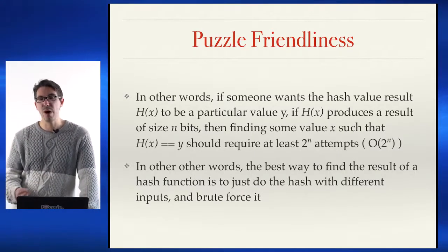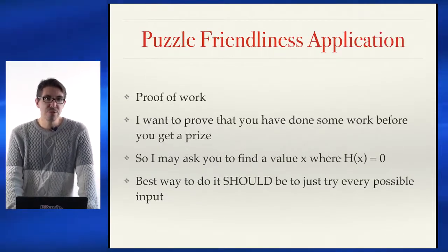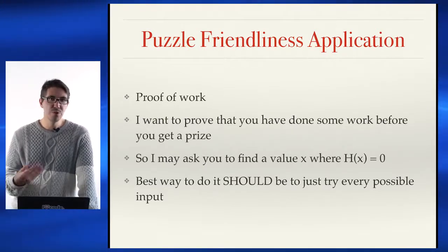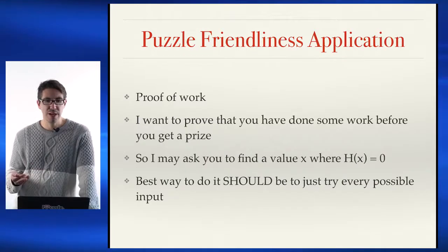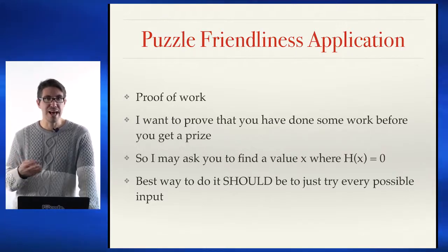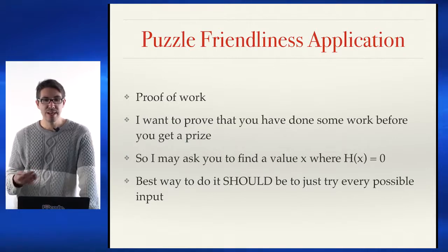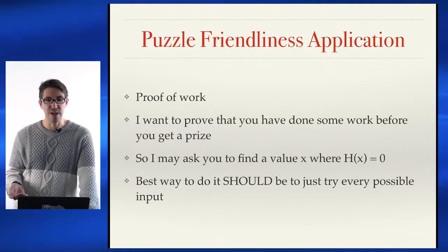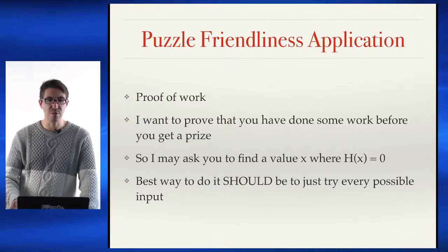There's no shortcut to say, 'if I add the letter A in my hash, I'll always have a zero at the beginning.' Puzzle friendliness comes in handy with proof of work — because if you want to prove to somebody that you have done work in order to get a prize, like generating a Bitcoin block, you're going to be asked to find the value of a hash that is below a certain number. The easiest way is just running lots of different possibilities — there are no shortcuts.